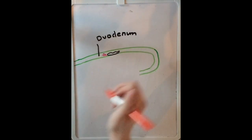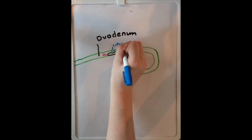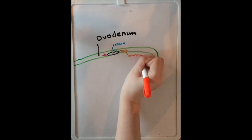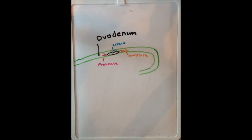In the duodenum, more enzymes from the intestinal wall and pancreas are added to the chyme. Pancreatic and intestinal juices contain enzymes such as protease for protein digestion, amylase for carbohydrate digestion, and lipase for fat digestion. You can see these juices being secreted onto the chyme.